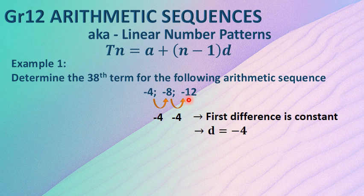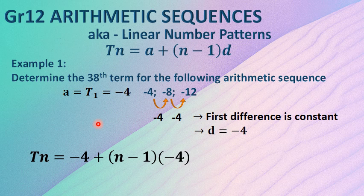Term 3 minus term 2 is -12 minus -8 will give us -4 again. Aha! First difference is constant. We are on the right track. We have a value for d. It must be -4. Straight from the question, the very first term of the sequence has given us our a value of -4 as well. And now we substitute that into our general formula and simplify and you'll get Tn equals -4n.